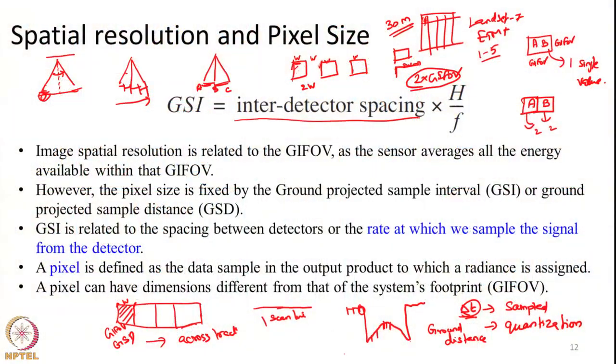So the pixel size is not actually determined by GIFOV. GIFOV is the area covered by one single look of the detector on the ground, whereas GSI is determined by the inter-detector spacing in the case of pushbroom scanners, or our sampling interval in the case of line scanner or whisk broom scanner. A pixel and the GIFOV need not be related — the GIFOV can be different and the pixel size can be different.